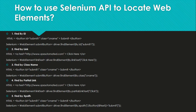Similarly, we can use link text. Link text means if you have a hyperlink that says 'Click Here' and you want to click it, you can select the link text directly and write it in your code to locate it. We can also use class name — in this example the class name is 'csName', which we can use to locate that element.